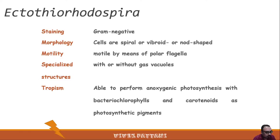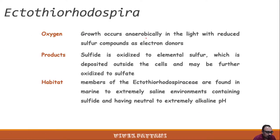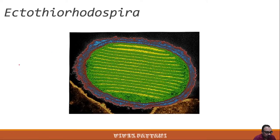Next is Ectothiorhodospira: gram-negative, cells are spiral, vibrioid, or rod-shaped, and motile by means of polar flagella, with or without gas vacuoles depending on the species. They are able to perform anoxygenic photosynthesis with bacterial chlorophyll and carotenoids as photosynthetic pigments. They grow anaerobically; sulfide is oxidized to elemental sulfur which is further converted to sulfates. Members of Ectothiorhodospiraceae are found in marine to extreme saline environments containing sulfide, with neutral to alkaline pH.